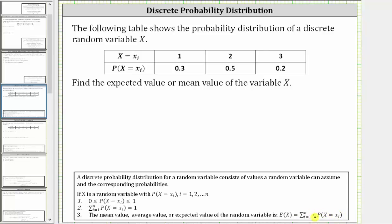Where x sub i represents the values the random variable can assume, given in the first row, and the probability that x equals x sub i are the corresponding probabilities given in the second row.